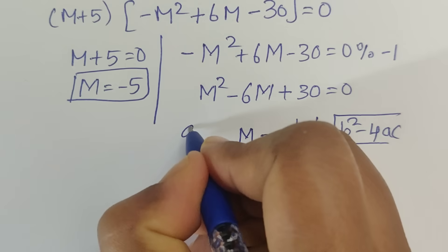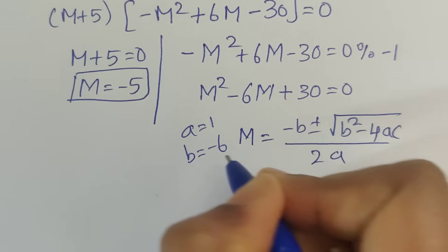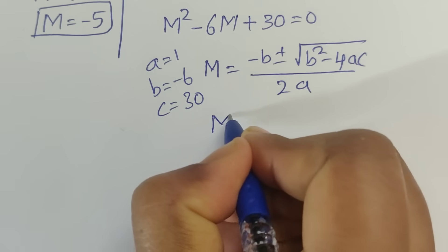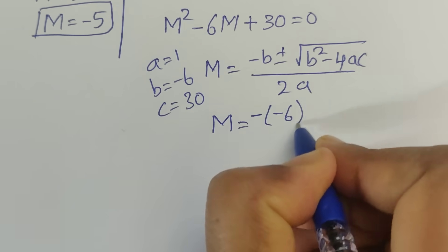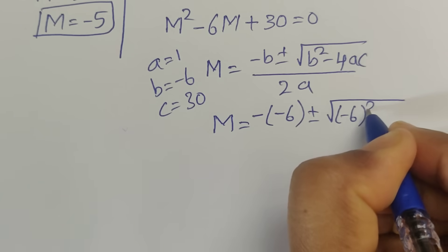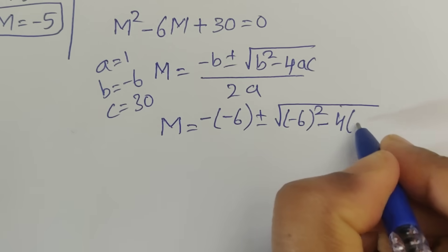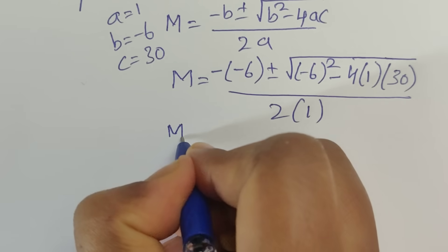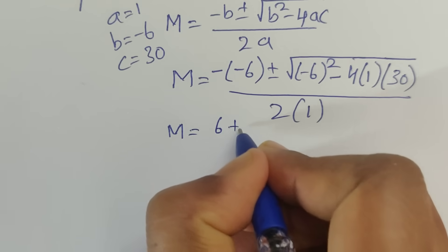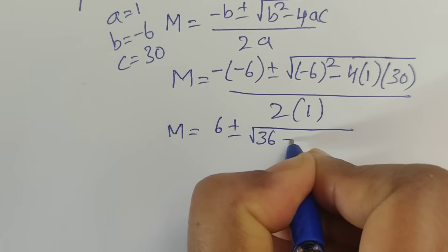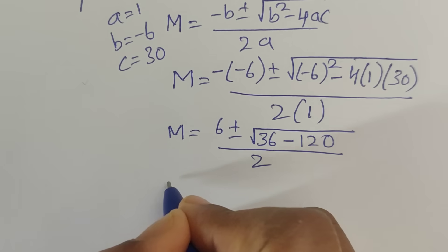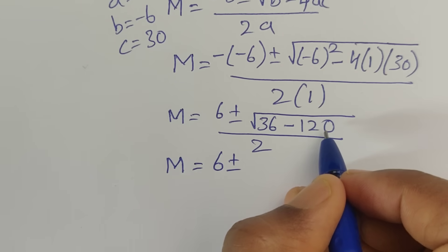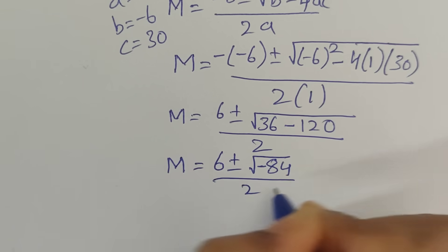So now what are the values of a, b, c? a equals 1, b equals minus 6, c equals 30. So just substitute the values of a, b, c in this formula. Then we will get the m value: m equals minus of minus 6, plus or minus square root of minus 6 squared minus 4 times 1 times 30, divided by 2 times 1. So m equals 6 plus or minus square root of 36 minus 120, divided by 2.